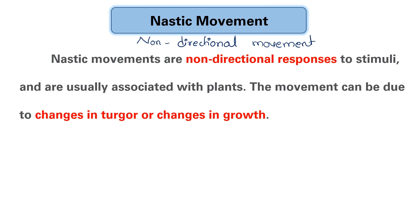Nastic movement is a non-directional response to stimuli, usually associated with turgor changes. The movement can be due to changes in turgor pressure or changes in growth.